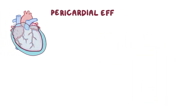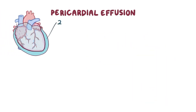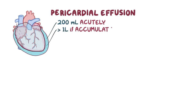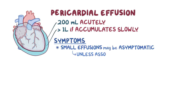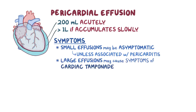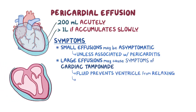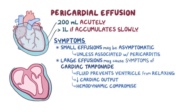In a pericardial effusion, the pericardial sac can fill up with up to 200 milliliters of fluid acutely, and over a liter of fluid if it accumulates slowly. Small effusions can be asymptomatic unless they're associated with pericarditis, whereas a large effusion can cause symptoms of cardiac tamponade. That's where the fluid around the heart prevents the ventricle from relaxing enough to accept blood, which lowers cardiac output and causes hemodynamic compromise, which can ultimately lead to shock. But timing matters, and if the effusion occurs rapidly enough, then even 100 milliliters can cause cardiac tamponade.